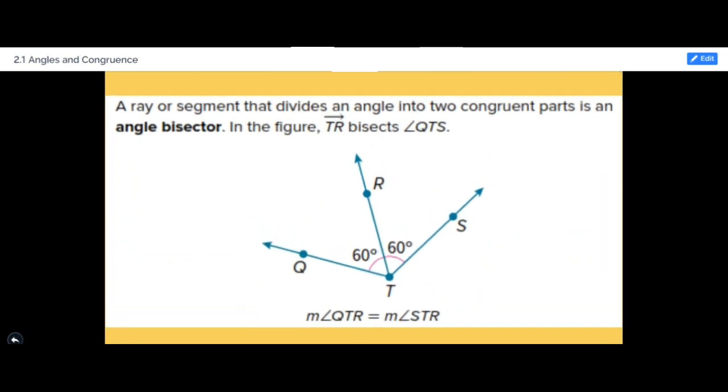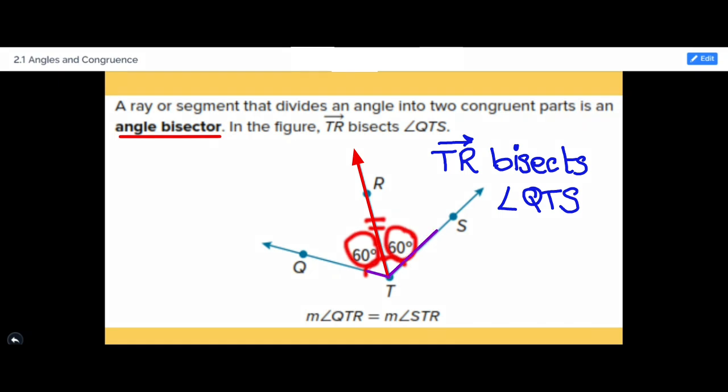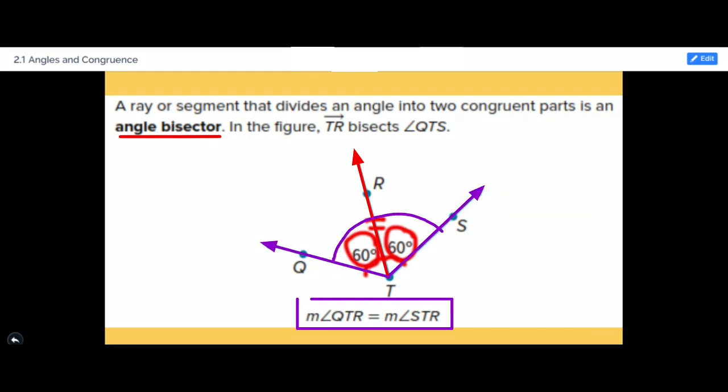Angle bisectors. A ray or segment that divides an angle into two congruent parts is an angle bisector. In this figure, TR bisects angle QTS. This means that measure of angle QTR equals measure of angle STR.